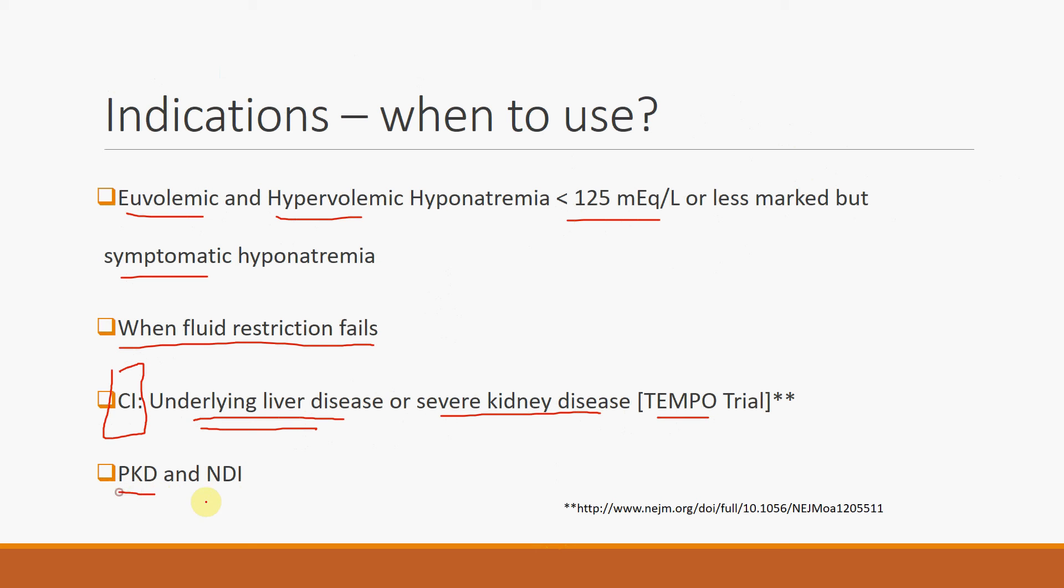In addition, Vaptans are also used in patients with PKD and polycystic kidney disease, and also nephrogenic diabetes insipidus. But for the purposes of this lecture, just remember that it's also used for euvolemic and hypervolemic hyponatremia treatment.